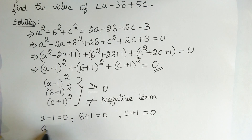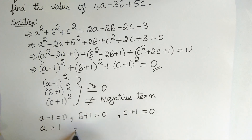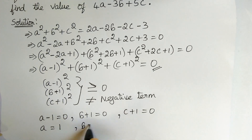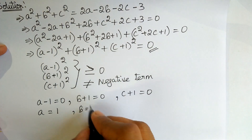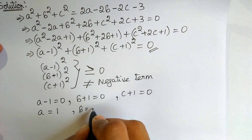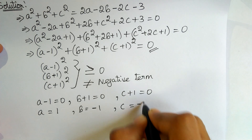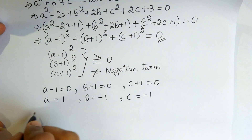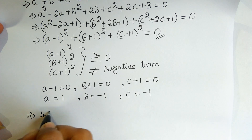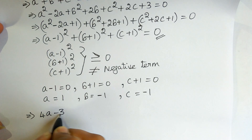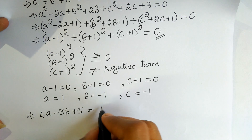Now we have the values of a, b, and c: a = 1, b = -1, c = -1. Now to find the value of 4a - 3b + 5c, let us substitute these values.